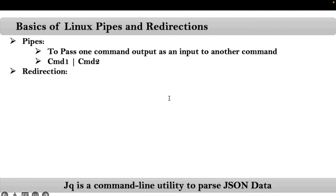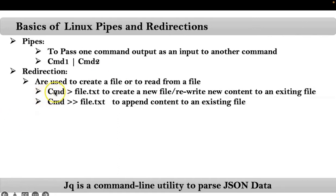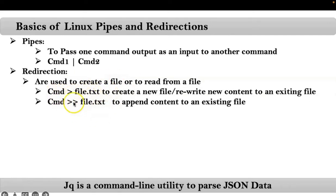The next concept is redirection. Redirections are useful in two cases: one is to create a file, and the second is to read content from a file. The syntax is: command > filename or command >> filename. With single greater-than we create a new file, but if the file already exists the existing content will be removed and new content stored. With double greater-than, if the file doesn't exist a new file is created, but if it exists the existing data remains and new data is appended at the end.